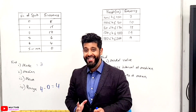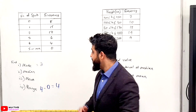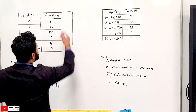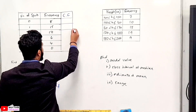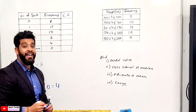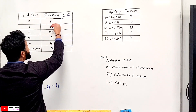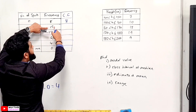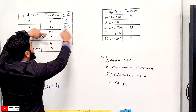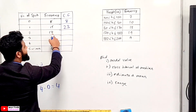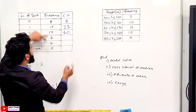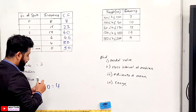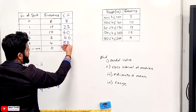Now let's focus on finding the median and the mean. For the median, you need an extra column called a CF column — cumulative frequency. What we want to do is add the frequencies as we go along. The first one is eight. Then we add the 15, so eight plus 15 gives us 23. Then 23 plus 17 gives us 40. Then we add the six, which gives us 46, plus the four, which is 50. The cumulative frequency is where you add all the frequencies as you go along and build them up.